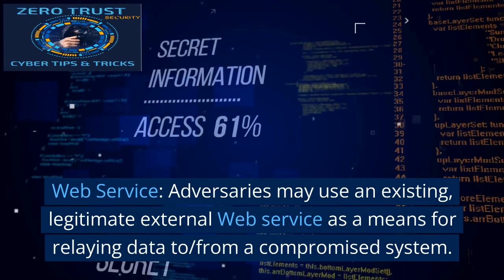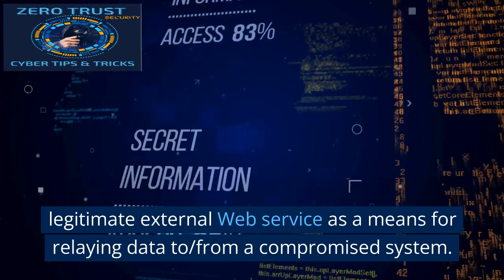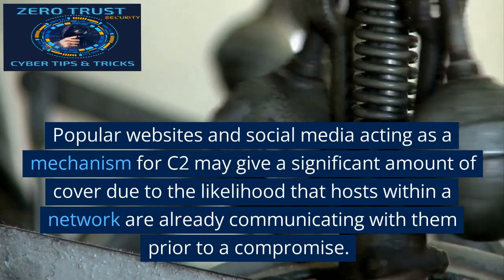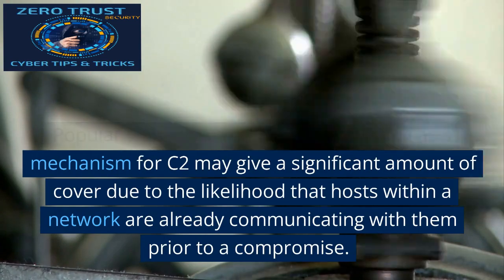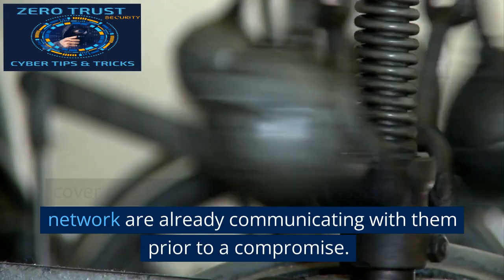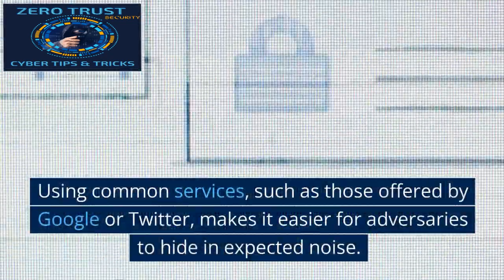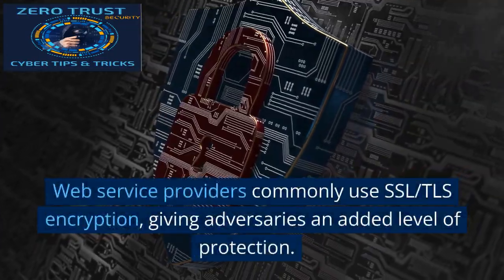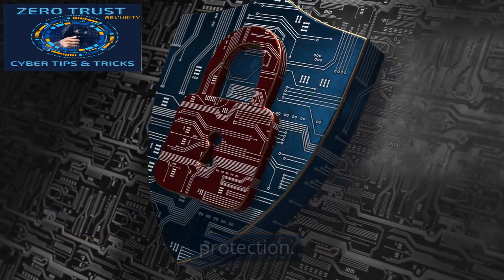Web service: Adversaries may use an existing, legitimate external web service as a means for relaying data to and from a compromised system. Popular websites and social media acting as a mechanism for C2 may provide significant cover due to the likelihood that hosts within a network are already communicating with them prior to a compromise. Using common services such as those offered by Google or Twitter makes it easier for adversaries to hide in expected noise. Web service providers commonly use SSL/TLS encryption, giving adversaries an added level of protection.